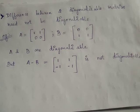But there exist plenty of other examples where the sum and product of two diagonalizable matrices may not be diagonalizable. So in general, the sum, difference, and product of two diagonalizable matrices need not always be diagonalizable.